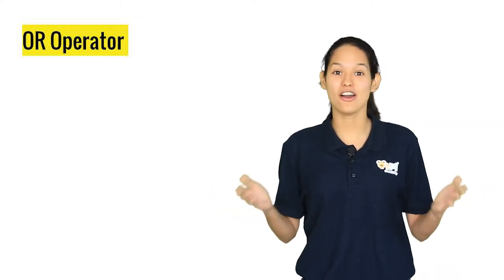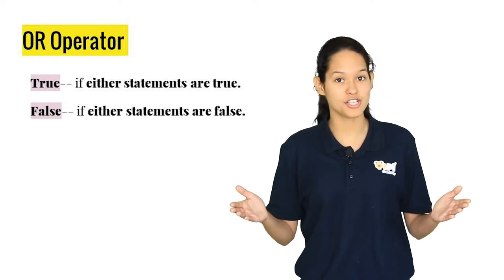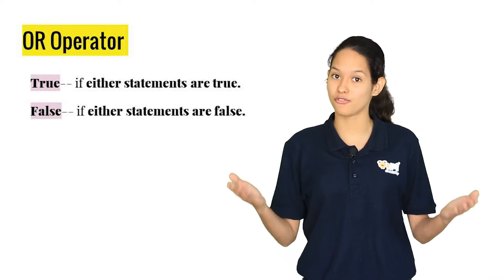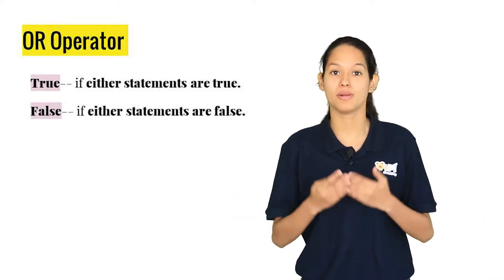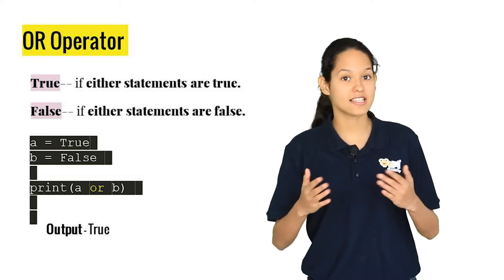Now let's take a look at the OR operator. In the OR operator, either one or both the conditions have to be true in order to get an output of true. If both the conditions are false, the output received will be false. You can try changing the values of A and B and see the difference.